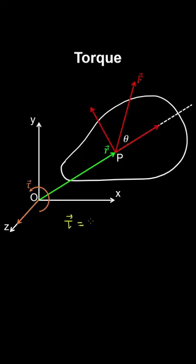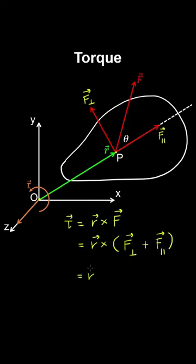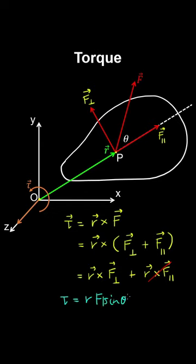A torque, or moment of a force, about a point O at distance to point P where the force is applied, is equal to the cross product between the radial vector and the force. Resolving the force into components perpendicular and parallel to the radial vector, the cross product between two parallel vectors is zero. The magnitude of the torque equals the magnitude of R times the perpendicular component of F, which is |F| sin(theta). Applying the right-hand rule, curling from R to the perpendicular component of F gives a torque vector pointing in the positive z direction, producing anticlockwise rotation about O.